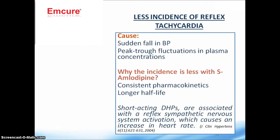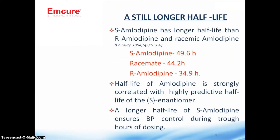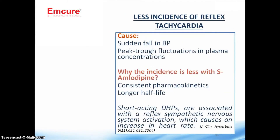The single enantiomer improves blood pressure control and enables control even during the risky trough hours. Non-selective agents cause high incidence of reflex tachycardia in dihydropyridine calcium channel blockers. The cause is a sudden fall in blood pressure which activates baroreceptors, raising heart rate. Peaks of fluctuation in plasma concentration and sudden falls in blood pressure are the reason for reflex tachycardia.